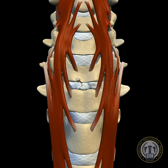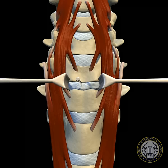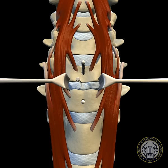Once the appropriate level is identified, blade retractors are placed under the longus colli muscles, and distractor pins are placed into the vertebral bodies above and below the diseased disc. At this point, the disc is incised and disc material is completely removed.